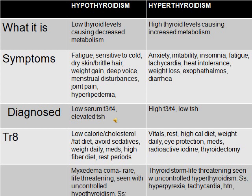Someone with too much thyroid has increased metabolism — they're going to have anxiety, irritability, insomnia, fatigue, tachycardia, heat intolerance, weight loss, exophthalmos, and diarrhea. Diagnosis: too little thyroid gives low serum T3 and T4 with high TSH; too much thyroid gives high T3 and T4 with low TSH.